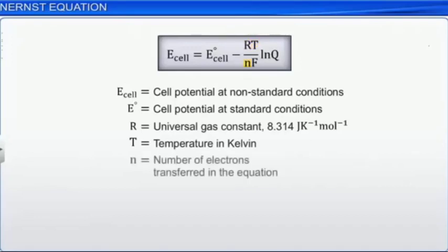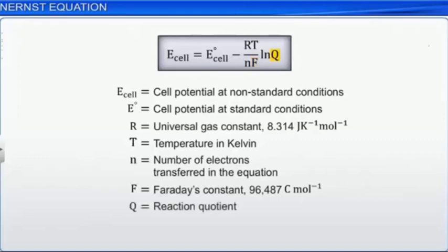N is the number of electrons transferred in the equation and F is Faraday's constant, 96,487 Coulombs per mole. Q is the reaction quotient or the ratio of products to reactants in terms of their molar concentrations.